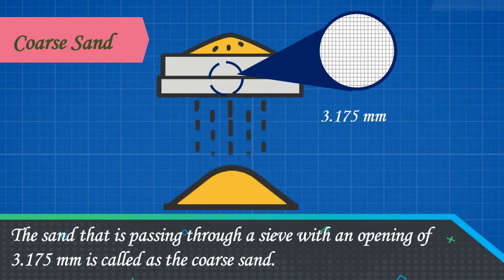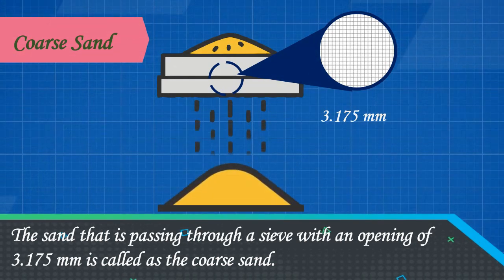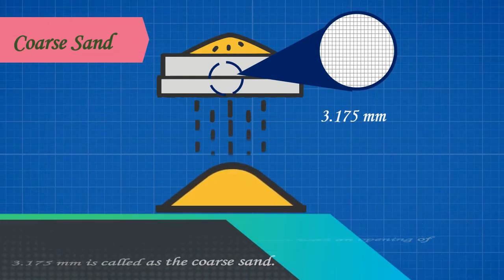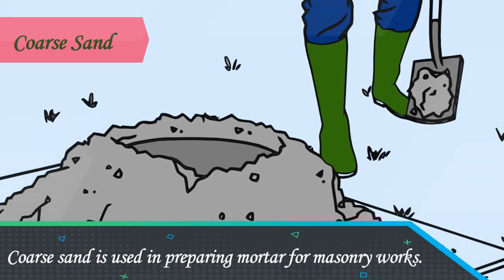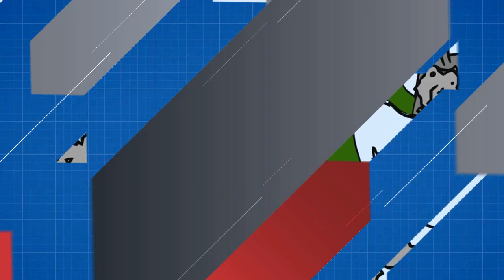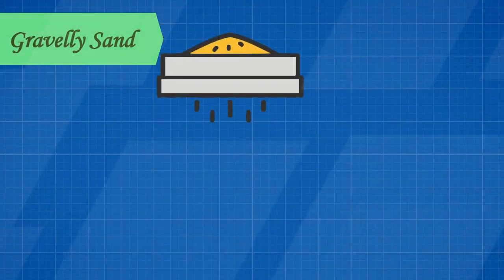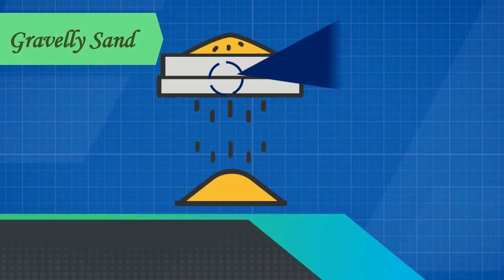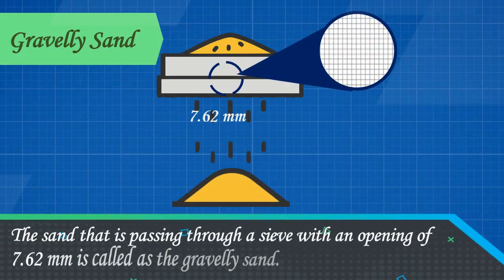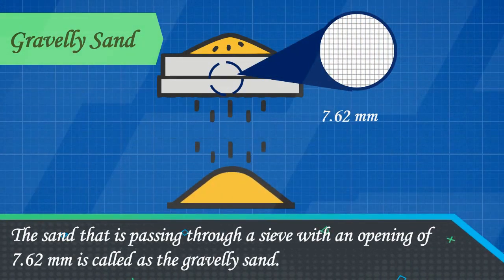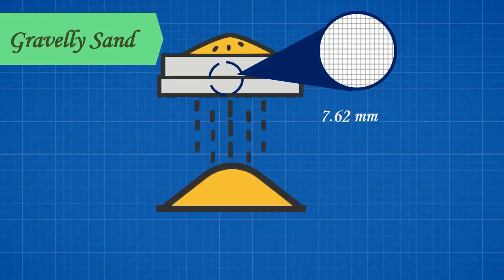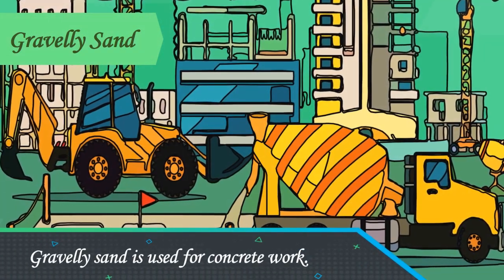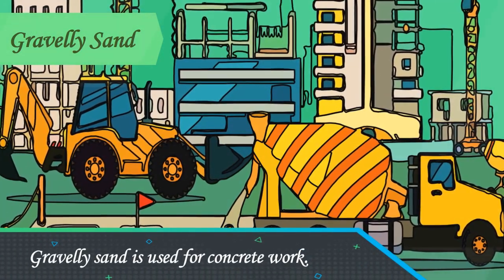Coarse sand is used in preparing mortar for masonry works. Gravelly sand is the sand that passes through a sieve with an opening of 7.62 millimeters. Gravelly sand is used for concrete work.